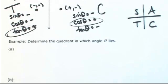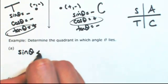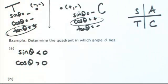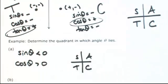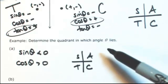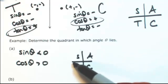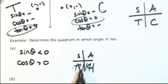Using this mnemonic, let's find which quadrant the angle is in given some trig function conditions. For example, if sine of theta is negative and cosine of theta is positive — sine is positive in quadrants one and two, so sine is negative in quadrants three and four. From three and four, cosine is positive only in the fourth quadrant. So theta is in the fourth quadrant.